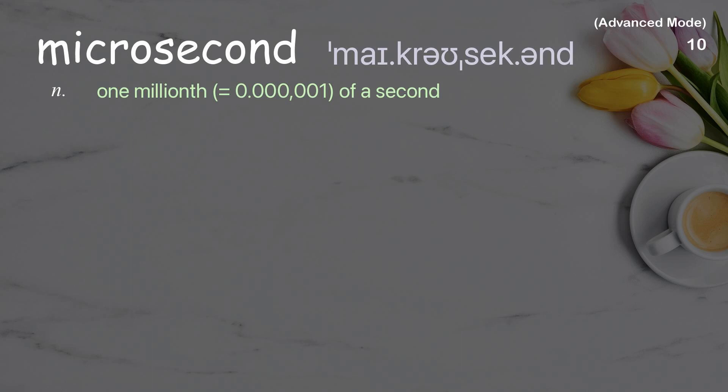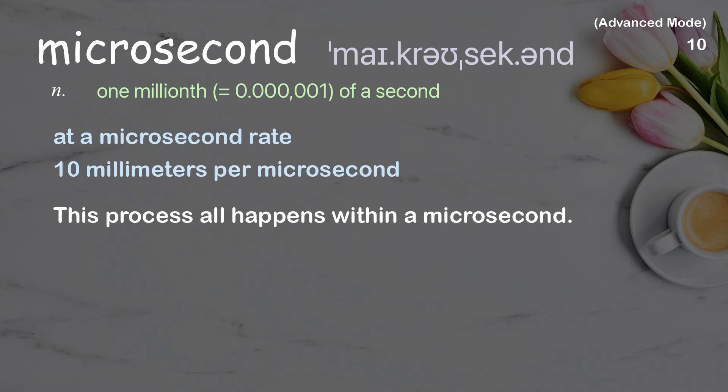Microsecond: 1 millionth (0.000001) of a second. Examples: at a microsecond rate, 10 millimeters per microsecond. This process all happens within a microsecond.